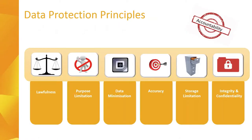Under the GDPR legislation there are six principles of data protection. Personal data should be processed lawfully, fairly and in a transparent manner. It needs to be collected for specific, explicit and legitimate purposes. It must be adequate, relevant and limited to what is necessary. It has to be accurate and kept up to date. It must be kept in a form which permits identification of data subjects for no longer than necessary. And it must be processed with appropriate security against unauthorized or unlawful processing. The overarching principle is accountability — you need to be able to demonstrate compliance.